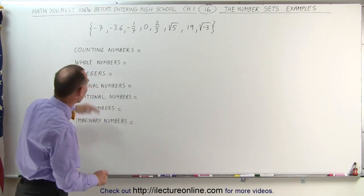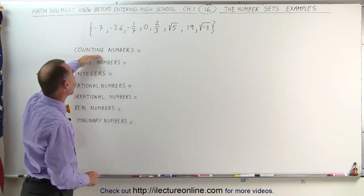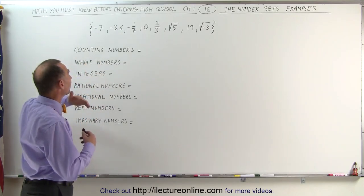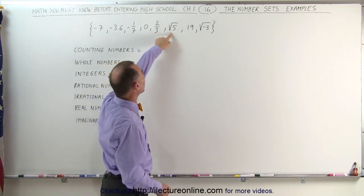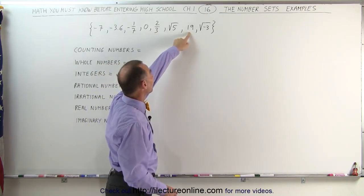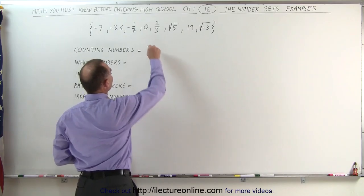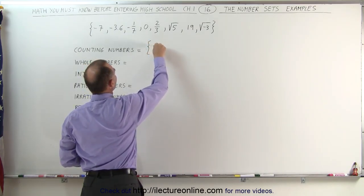Let's start with the counting numbers. Well, the numbers have to be greater than zero, so any negative numbers don't count. They cannot be fractions or radicals, so there's only one number here that fits, the number 19. That would be the set of counting numbers.